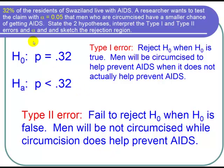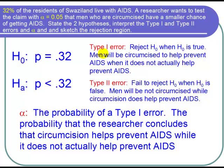Alpha is always the probability of a type 1 error. So that means it's the probability that the researcher concludes that circumcision helps prevent AIDS when it does not actually prevent AIDS at all — because that's what a type 1 error is.